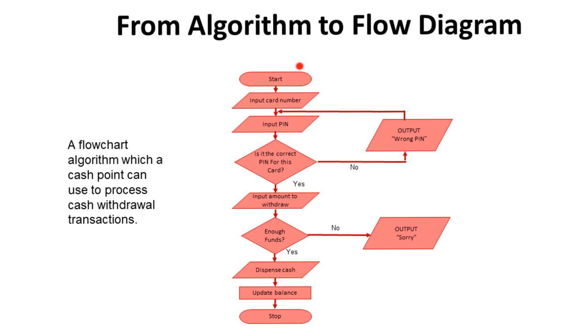So we start here. The program starts by asking the user of the cash machine to input their card number and input their PIN. The computer then checks if the PIN is correct. If the PIN is correct, we proceed down. If not, it outputs wrong PIN and returns here. Assuming the PIN is correct, it asks them how much cash they want to withdraw.